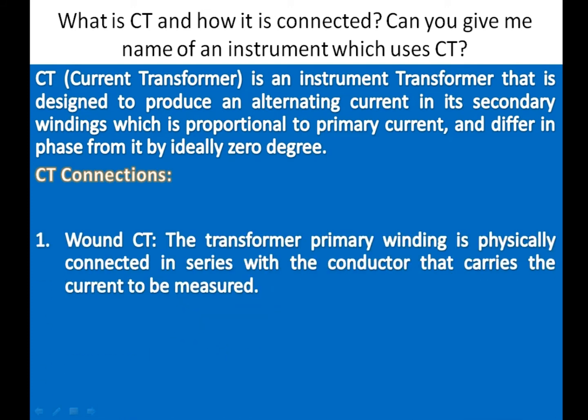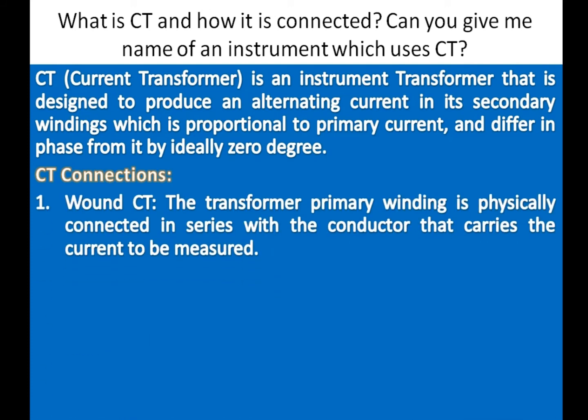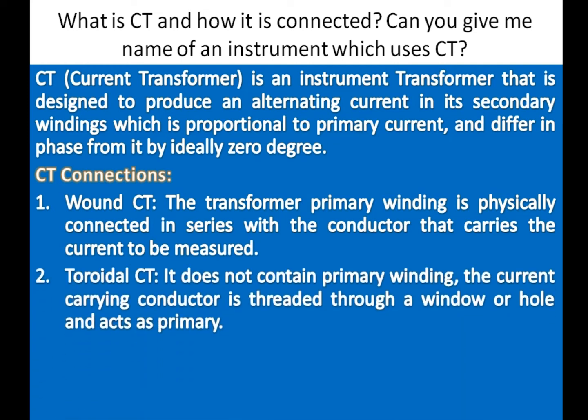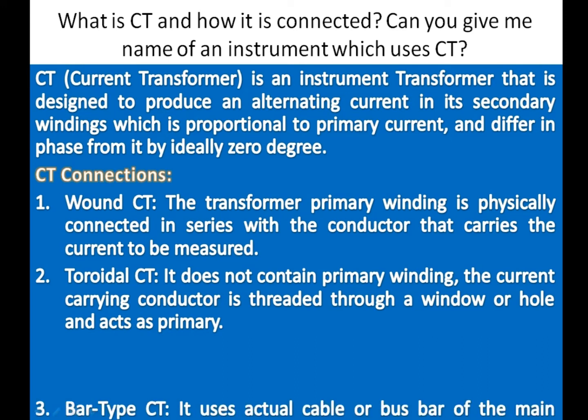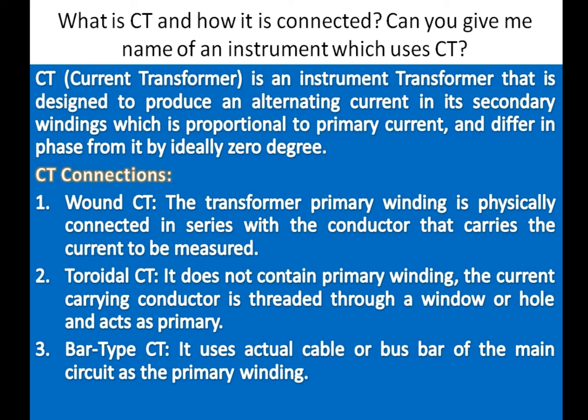CT connections. 1. Wound CT: The transformer primary winding is physically connected in series with the conductor that carries the current to be measured. 2. Toroidal CT: It does not contain a primary winding; the current carrying conductor is threaded through a window or hole and acts as primary. 3. Bar type CT: It uses the actual cable or bus bar of the main circuit as the primary winding.